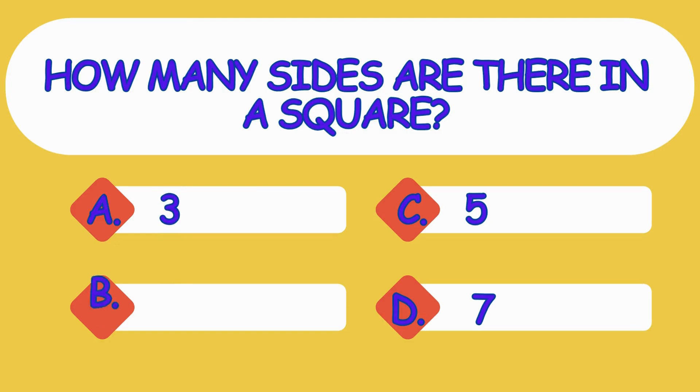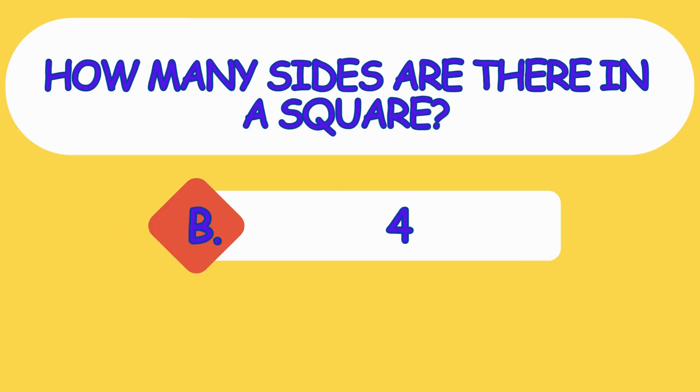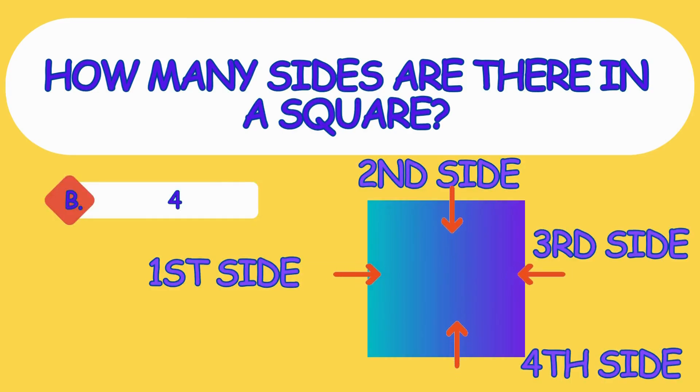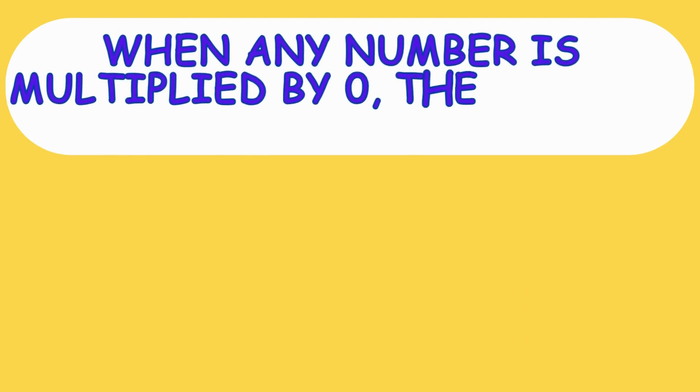How many sides are there in a square? A. 3, B. 4, C. 5, D. 7. The answer is option B, 4.